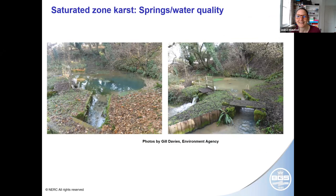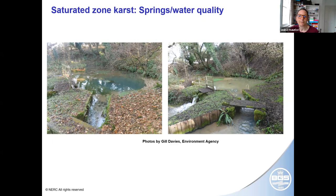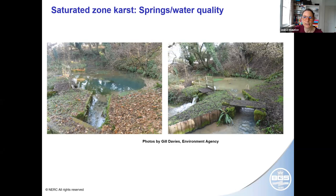Water quality can also be indicative of karst. This spring under normal conditions has a lovely blue-green colour, but about 24 hours after rainfall it's really turbid because it's connected to stream sinks. Other water quality indicators include coliforms, which only persist for a short time in the subsurface, and rapidly degrading pesticides. The knowledge exchange work showed that water quality indicators of karst and rapid flow are common in chalk abstractions, but with very variable concentrations. It appears that at many sites the proportion of rapid flow feeding springs and abstractions may be quite low, but rapid flow is common.